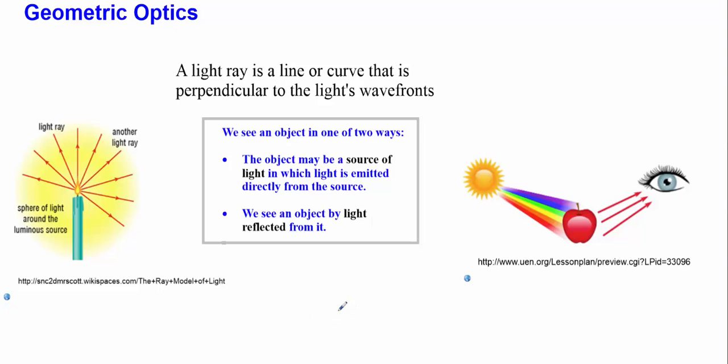Now, we can see objects in one of two ways. We can see an object as a source of light, like a candle or the sun or a light bulb. Light will be leaving it, and as a result, you can see the object.